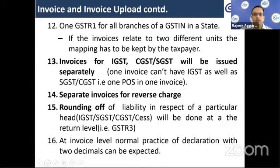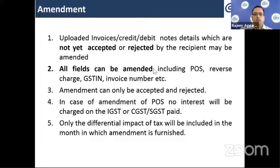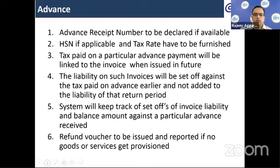Invoices for IGST, CGST, and SGST will be issued separately, and there will be a separate invoice for reverse charge. Uploaded invoices, credit and debit notes that have not yet been accepted or rejected by the recipient may be amended. All fields can be amended including place of supply. Amendments can only be accepted or rejected by the receiver. In case of amendment of place of supply, no interest will be charged on IGST or CGST paid — only the differential impact of tax will be included in the month in which the amendment is furnished.